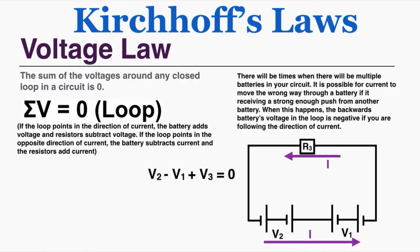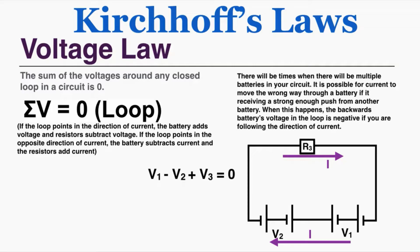There will be times when there are multiple batteries in your circuit. It's actually possible for current to move the wrong way through a battery if it receives a strong enough push from another battery. When this happens, the backward battery's voltage in the loop is negative if you're following the direction of current. Following the current direction, the voltage across the second battery is positive, but negative across battery one because that battery is pointing in the wrong direction — its positive end is facing toward the current. I'm going to consider this a counterclockwise loop and say V2 minus V1 plus V3 equals zero.